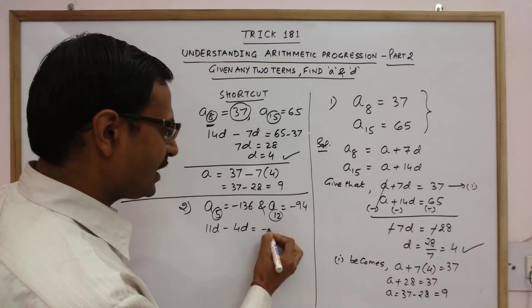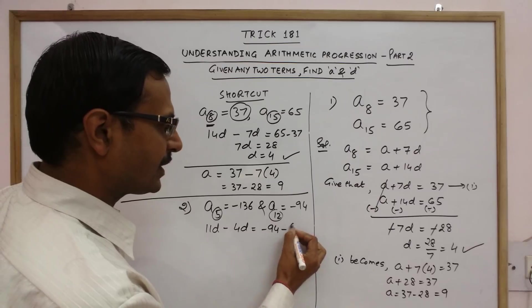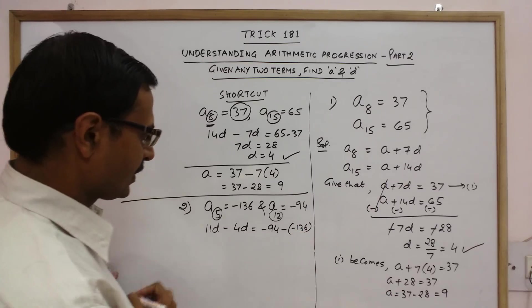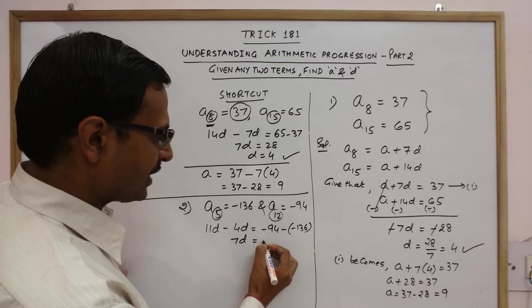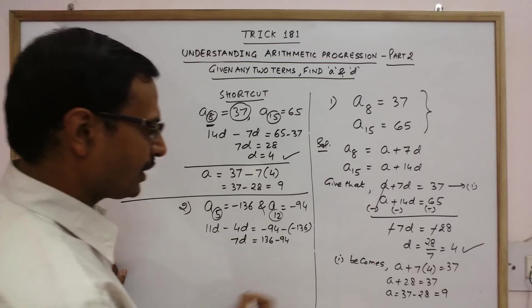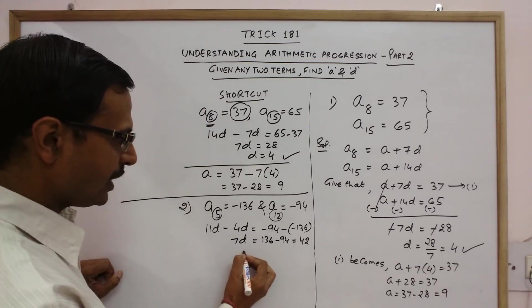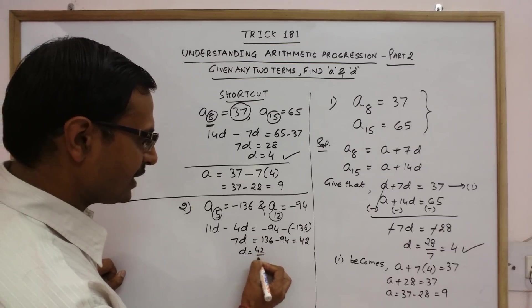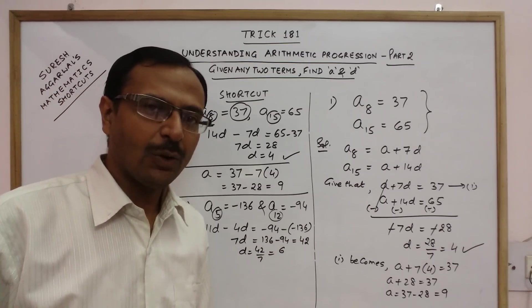Here we have minus 94, subtract. Here we have minus 136. So this becomes 7D equal to minus 94 plus 136. So here you get 42. So D comes out to be 42 by 7 that is 6. So 1 step and we get the value of D.